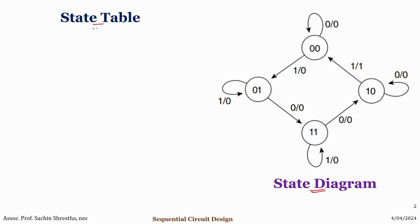Based on the given state diagram we will represent it as a table. If the video becomes too long I will break this down into two parts, and in the second part we'll go with the design of the sequential circuit. This is an example of a state diagram, so we'll try to understand what the state icon represents and how to generate a state table. If we understand this clearly, we can also generate the state diagram based on the state table.